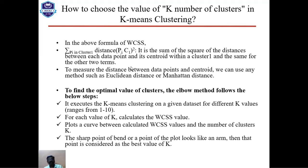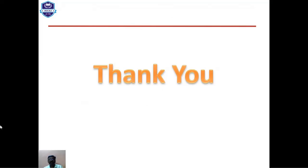To measure the distance between data points and the centroid, we can use any method such as Euclidean distance or Manhattan distance. To find the optimal value of K, the Elbow Method follows these steps: execute K-Means clustering on the dataset for different K values ranging from 1 to 10; for each value of K, calculate the WCSS value; plot a curve between the calculated WCSS values and the number of clusters K. The sharp point of bend — where the plot looks like an elbow — is considered the best value of K.